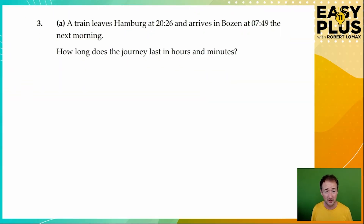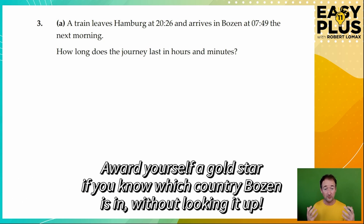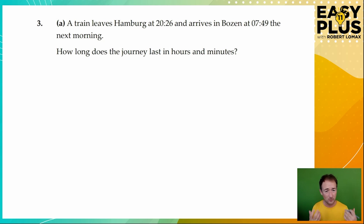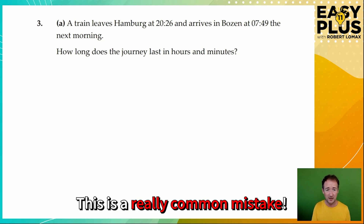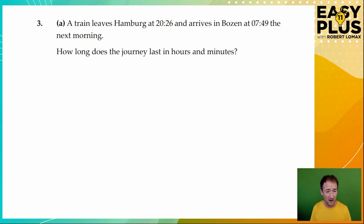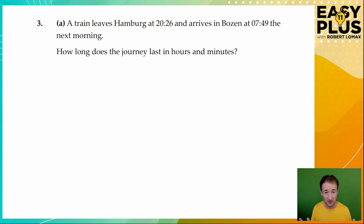Here we've got a question about a train journey from Hamburg to Bautzen. Because there's no mention of a time difference, you can assume Hamburg and Bautzen are in the same time zone, even though they're in different countries. This question is a good example of why using ordinary adding or subtracting can get you into a real tangle. Would you do 7:49 minus 20:26, or 7:49 minus 8:26? Either way you're going to get a negative answer. Do you do 20:26 minus 7:49? But then you're working the wrong way. What's more, minutes are out of 60 whereas hours come in groups of 12 or 24 — so carrying between sections gives a completely wrong answer. That's why the stepwise counting approach is so useful.